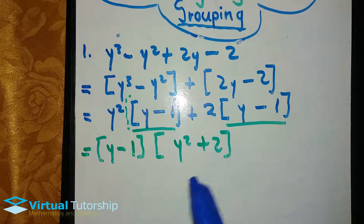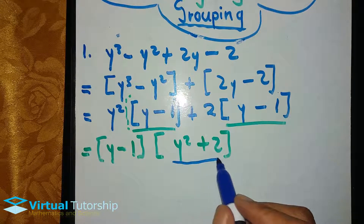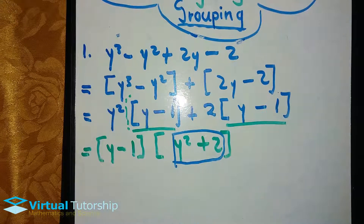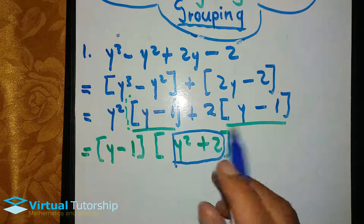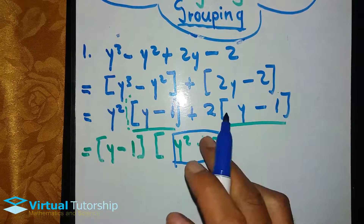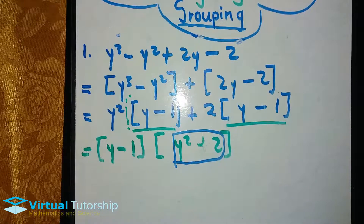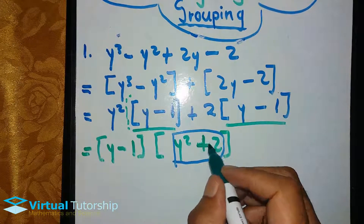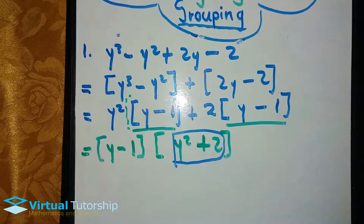So, the final answer is y minus 1 times y squared plus 2. Remember, y squared plus 2 is prime — it cannot be factorized further. But if there was a minus in between, it would be a difference of two squares and you could factor it further.